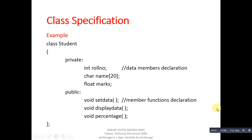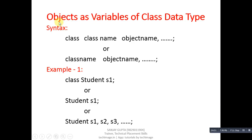Now, object as variables of class data type — the third block from our initial slide. The syntax is: first use the 'class' keyword, then the name of the class, then the object name, which can be any identifier. You can also write the class name and object name directly. For example, 'class student s1' — here s1 is considered the object of the class. You can write 'student s1', or declare multiple objects as 'student s1, s2, s3'.